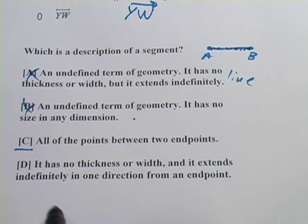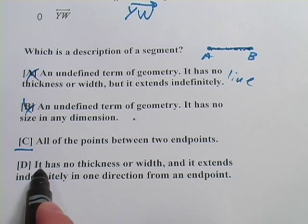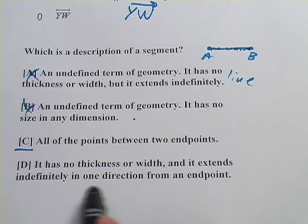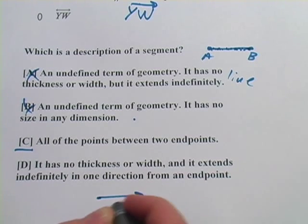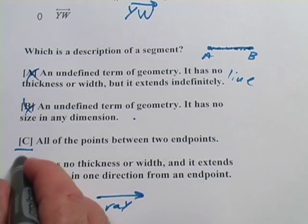Let's just look at D, just because we can. It says it has no thickness or width, and it extends indefinitely in one direction from an endpoint. I hope you would know that that is a ray. So that's not our right answer either.